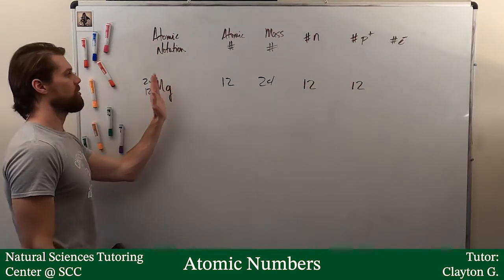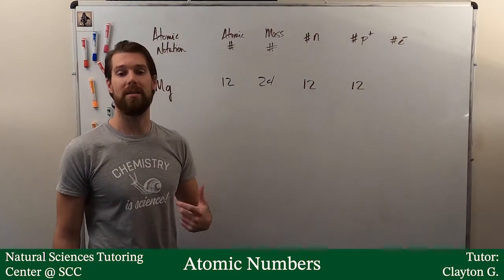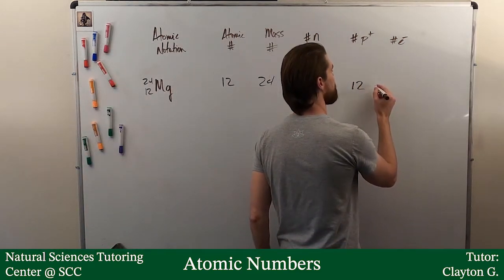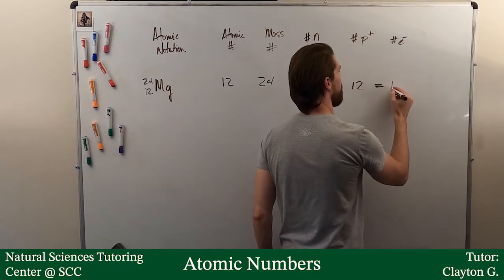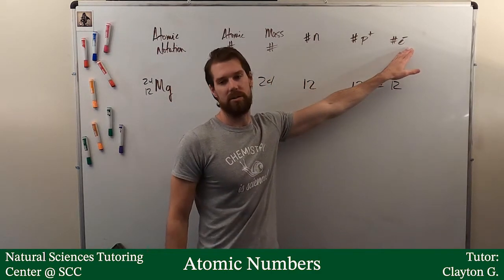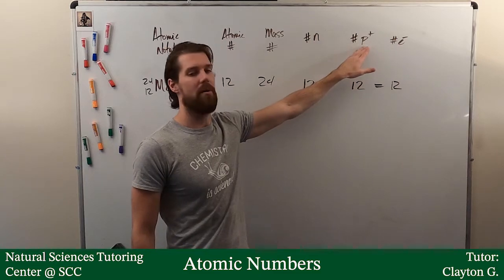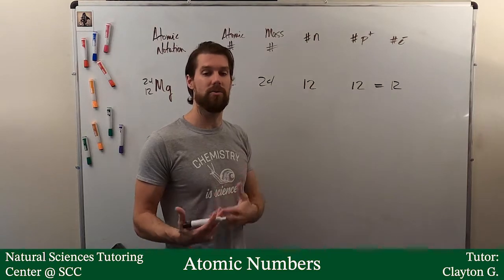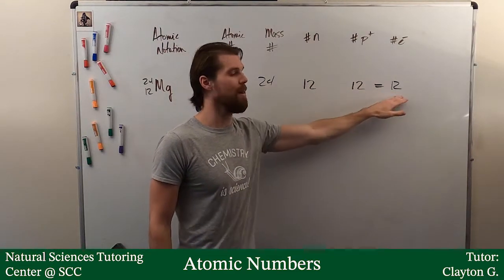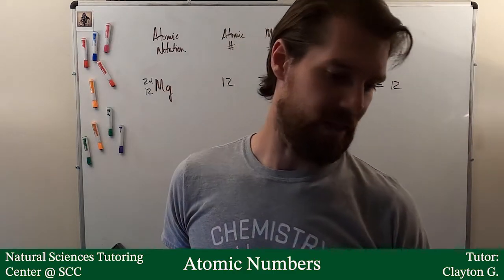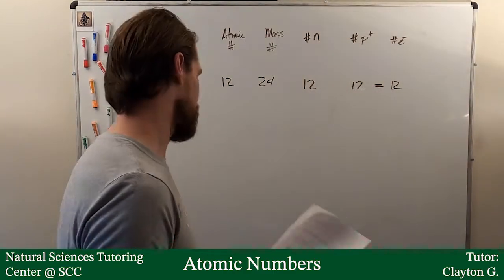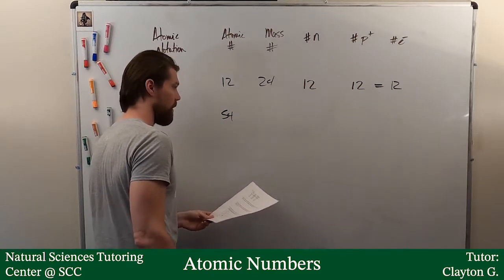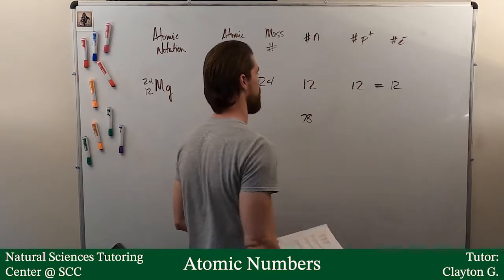As long as there's no charge, which you would assume unless indicated otherwise, we can say that the number of protons equals the number of electrons. As much negative charge as you have, you have the same amount of positive charge as long as it's neutral. If it's not neutral, then we know we have an imbalance here somewhere. Let's go ahead and pull the next one down. We are given an atomic number of 54 and we are told we have 78 neutrons.